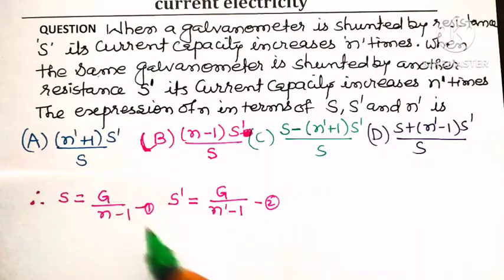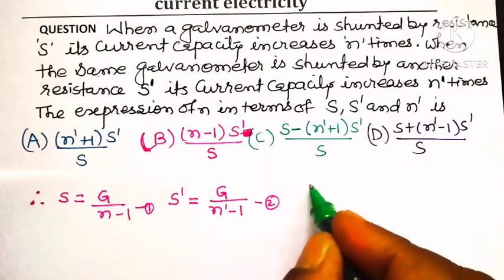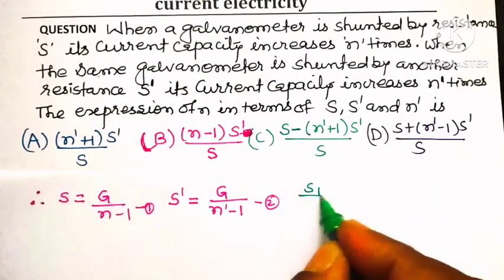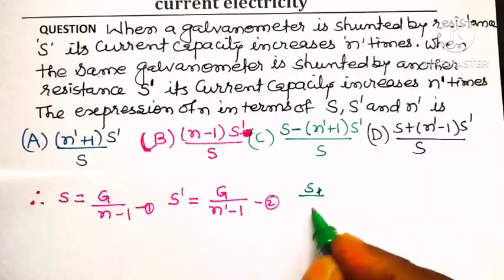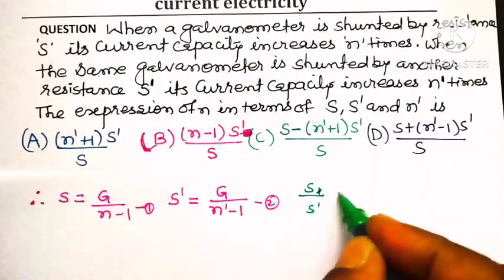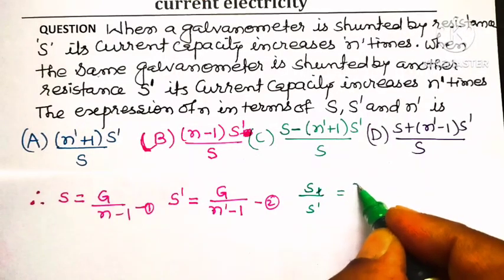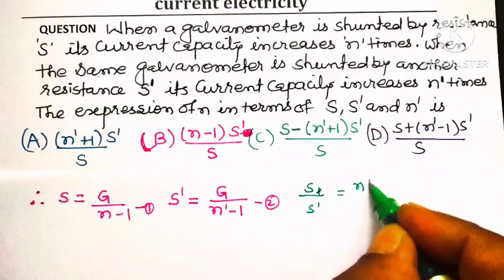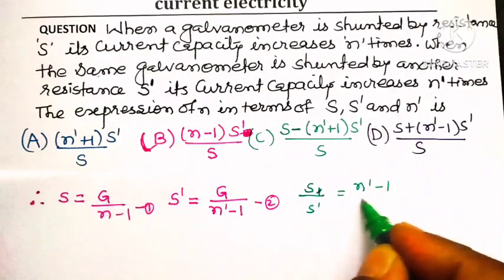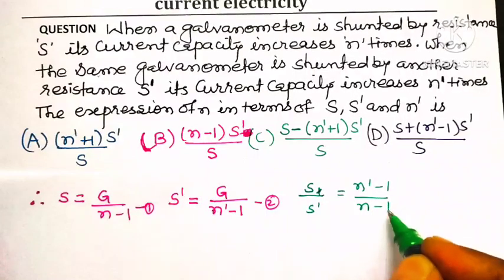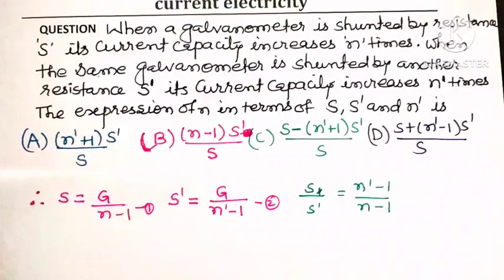Now let us divide Equation 1 by Equation 2. We get S divided by S' equals (n' - 1) divided by (n - 1).